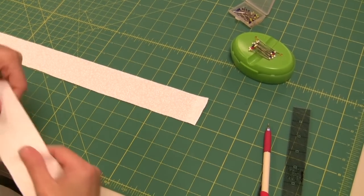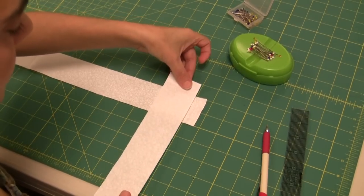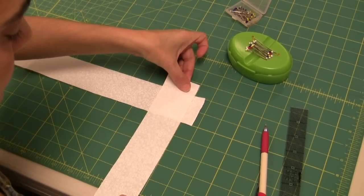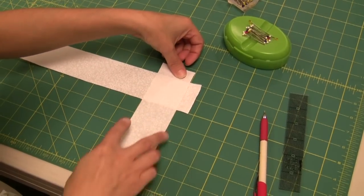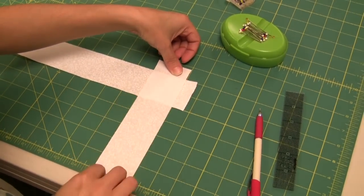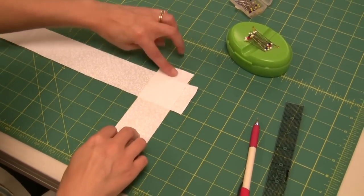My next strip is going to lay on top of it, but vertically. Again, I'm going to follow my grid lines on my mat. This way I know that I am nice and straight horizontally as well as vertically.